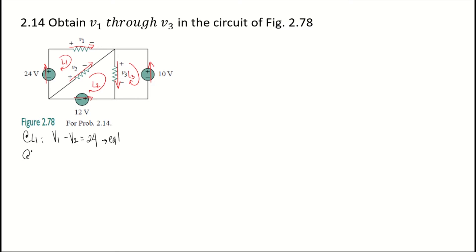At loop 2, you have the voltage drops of V2 and V3. V2 and V3 have the same direction as the loop, so it is positive V2 plus V3, equal to the summation of voltage supplies. The voltage supply of 12 volts opposes the direction of loop 2, so it is negative 12. This is Equation 2.